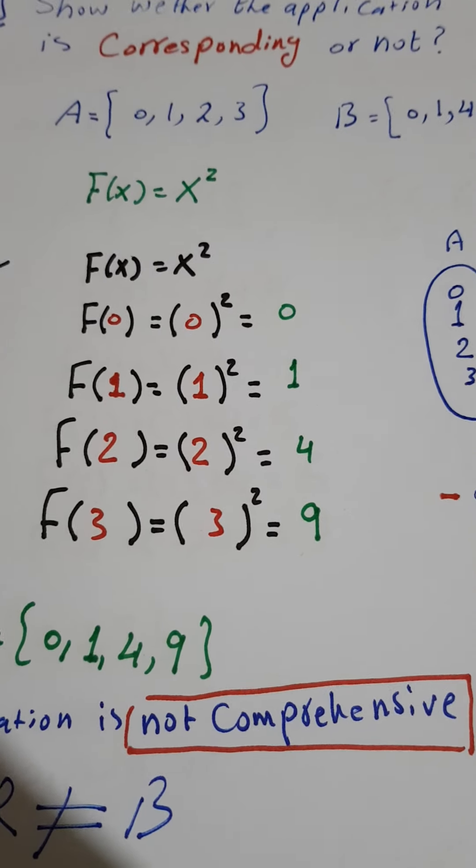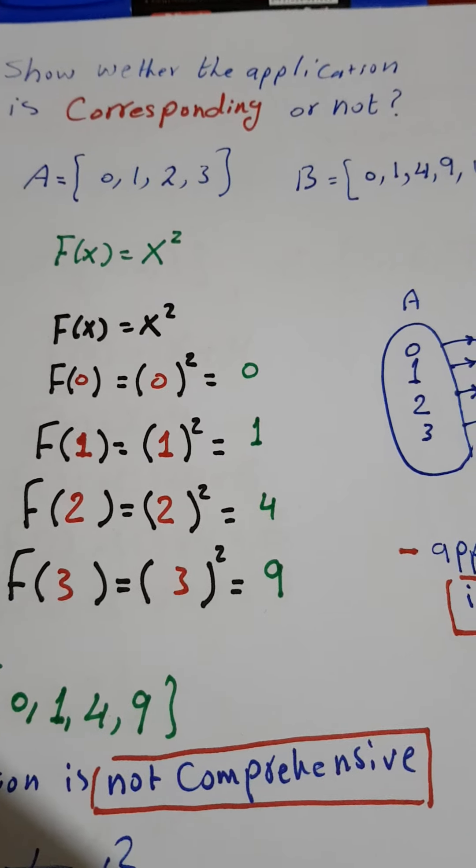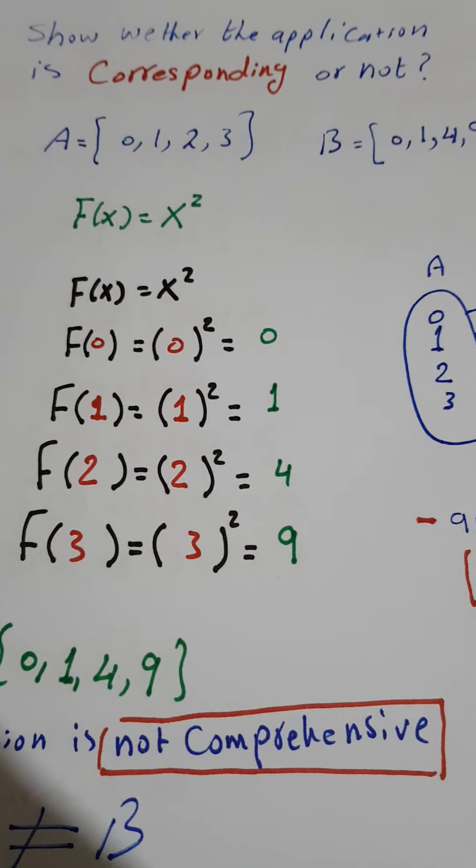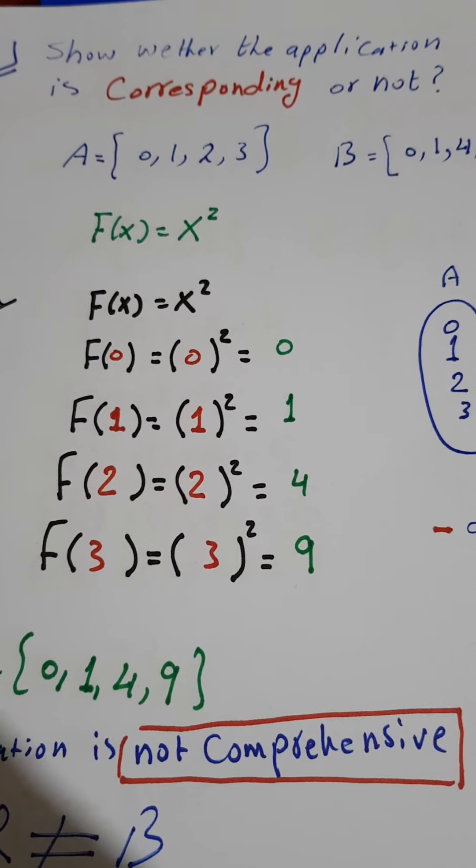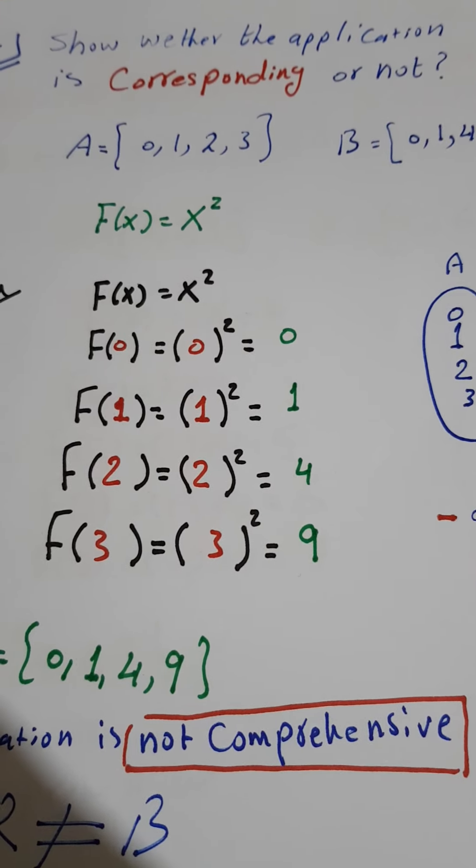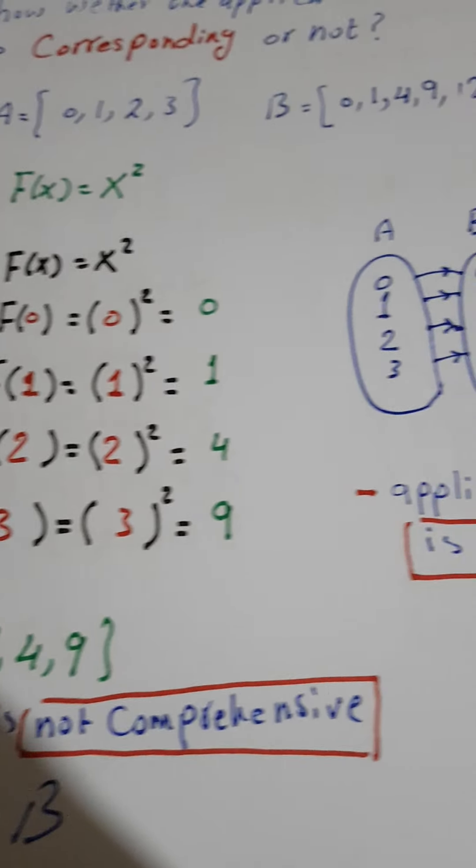Hi guys, how are you? I come back to another question example. Show whether the application is corresponding or not. A is equal to {0, 1, 2, 3} and B...